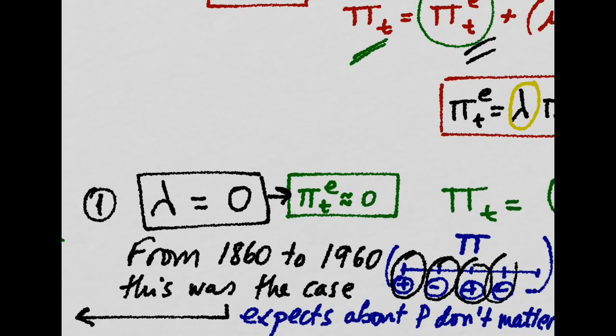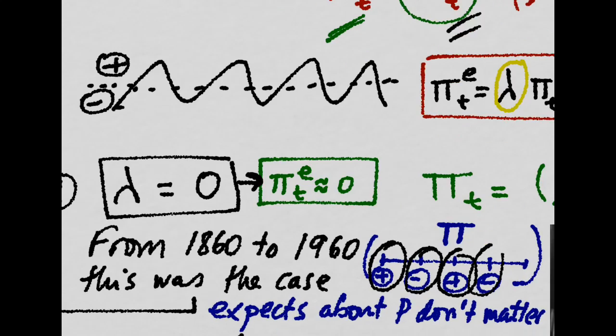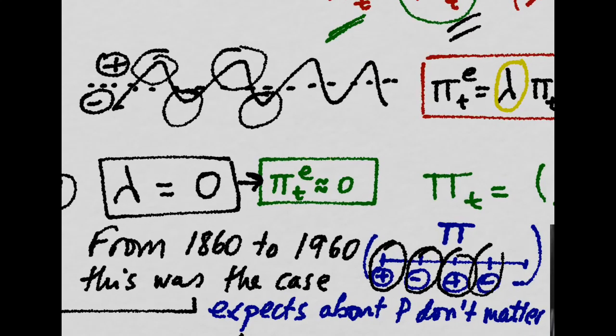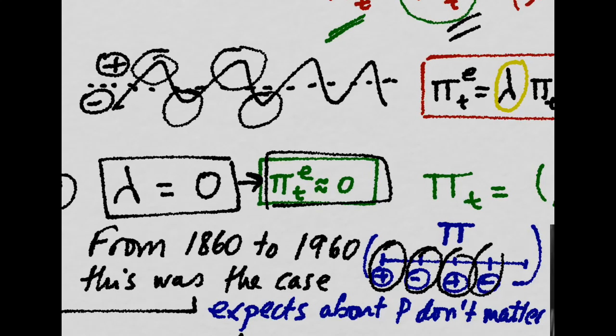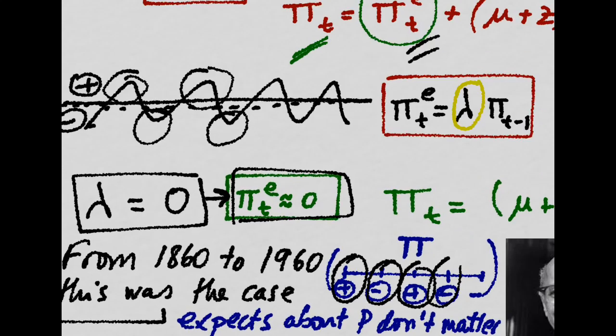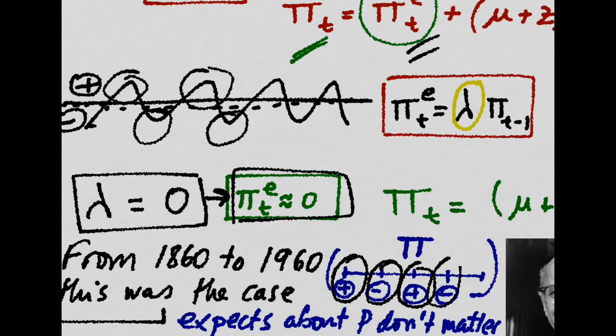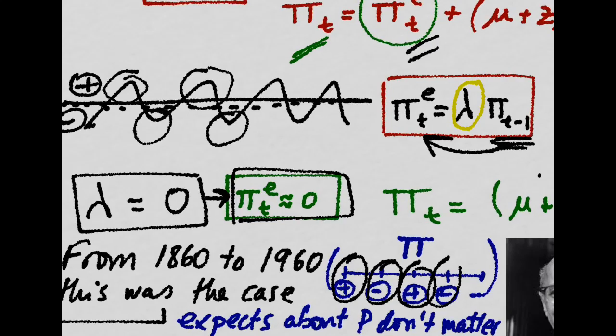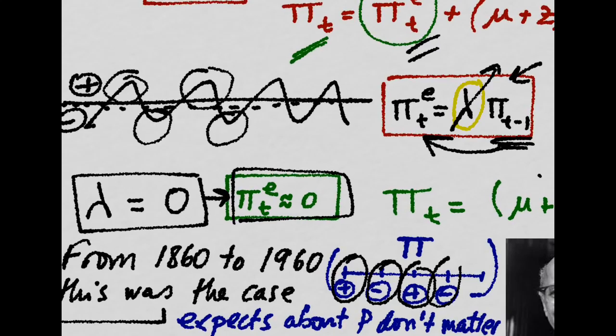So, before the 60s, seeing some years it was positive and some it was negative, the best forecast for inflation was actually that it was zero. People couldn't really look back to the recent experience in order to forecast inflation, so this was useless and lambda was zero.